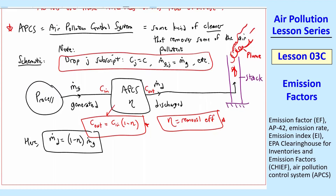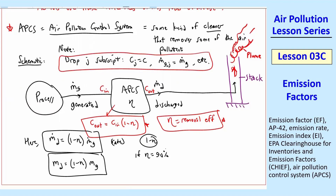We're discharging (1 minus eta) times what we generate. We can write this in terms of rates — M-dot_D equals (1 minus eta) times M-dot_G — or in terms of actual mass: M_D equals (1 minus eta) times M_G. Be careful with the (1 minus eta). For example, if eta is 90%, only 10% of the original M-dot_G is discharged. So 90% removal means 1 minus 0.9 equals 0.1, meaning 10% goes through. This is one of the biggest mistakes students make.